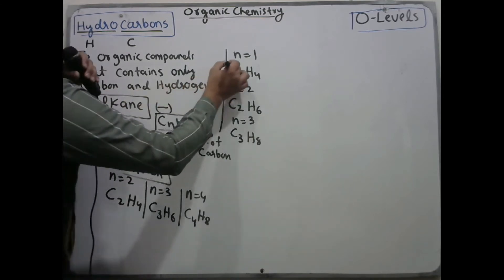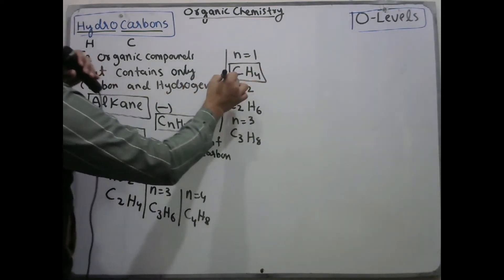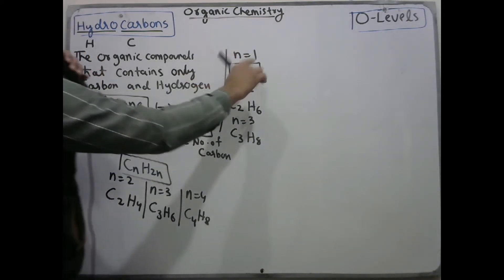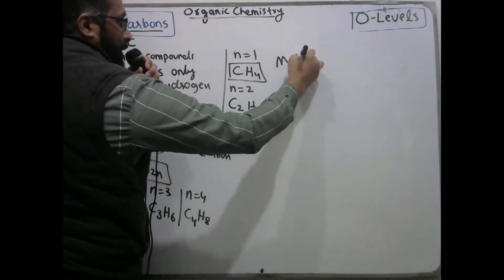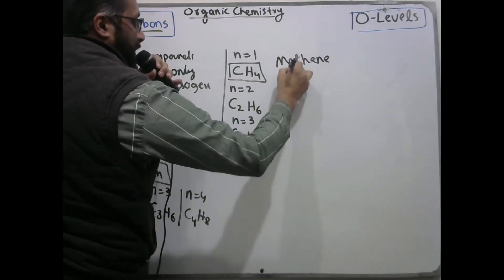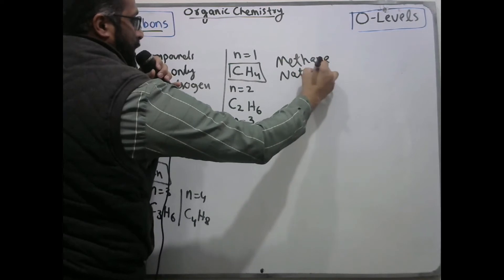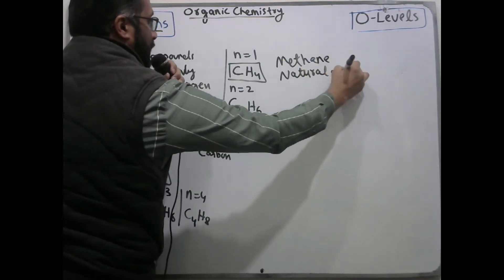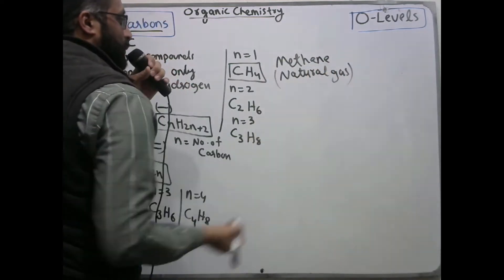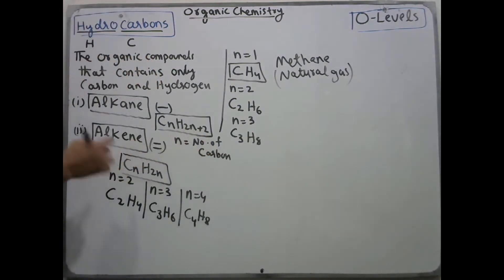CH4 is the smallest organic compound as well, named methane, also called natural gas. The formula for natural gas is methane. Similarly, the smallest alkene is C2H4, the smallest member of alkenes.